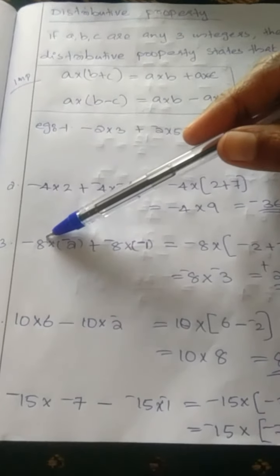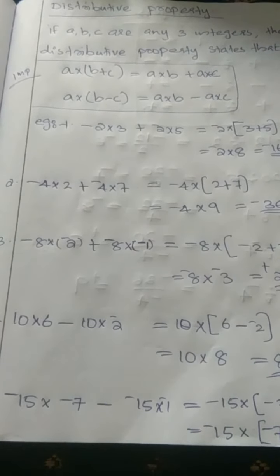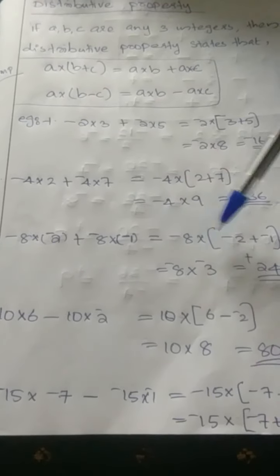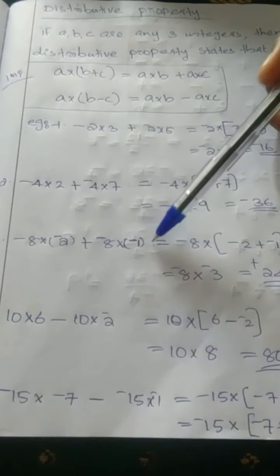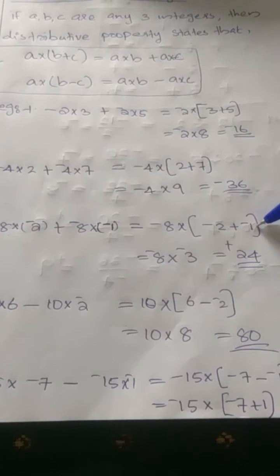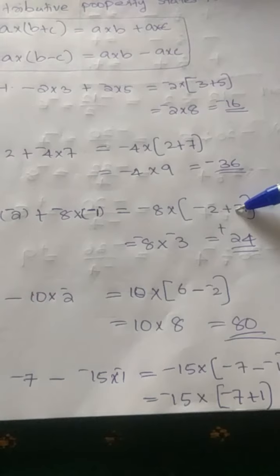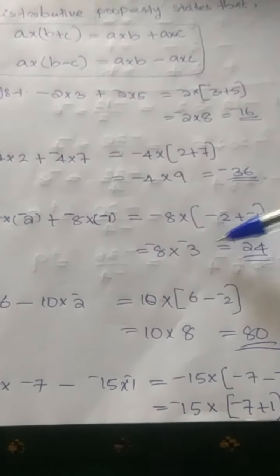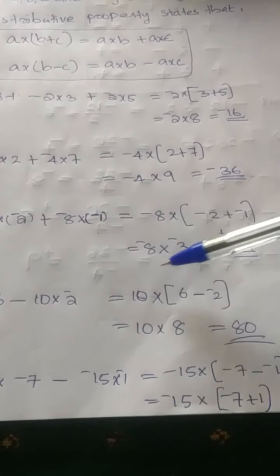One more question: minus 8 into minus 2 plus minus 8 into minus 1. Which is the common number? Minus 8 is common. Take out minus 8, put the multiplication sign and bracket, and write the two numbers: minus 2 and minus 1. So it becomes minus 8 into (minus 2 plus minus 1). Now minus 2 plus minus 1 — changing the two negative signs gives minus 2 minus 1, which equals minus 3. So minus 8 into minus 3 becomes plus 24, because two negatives make a positive and 8 into 3 is 24.